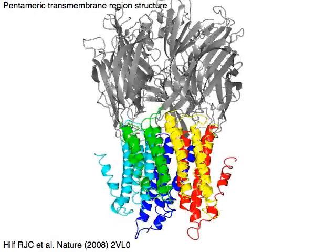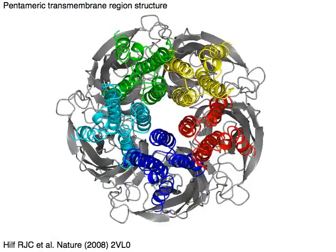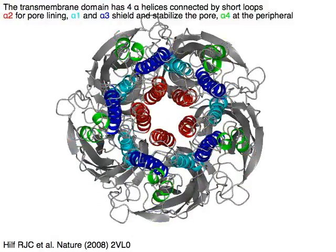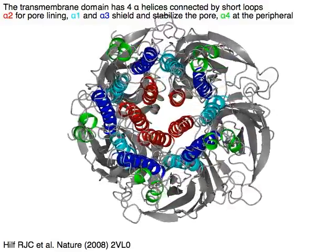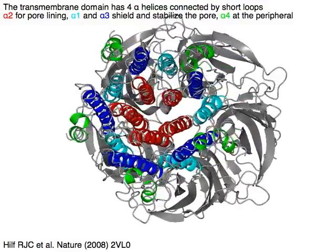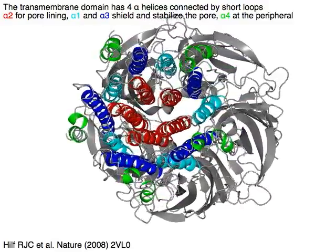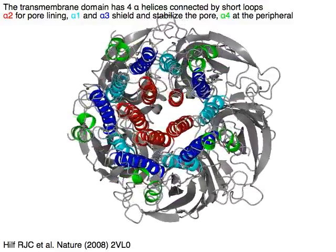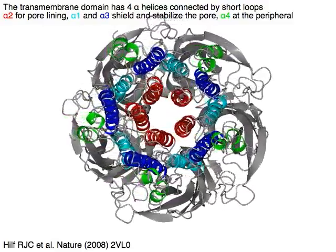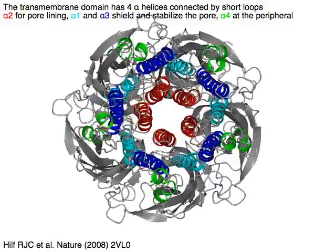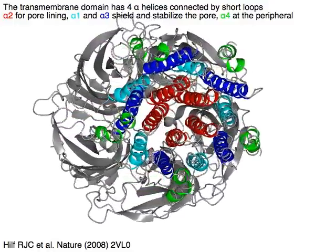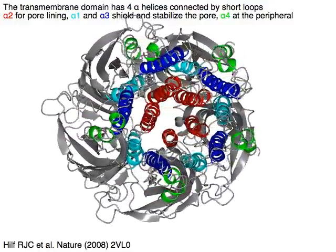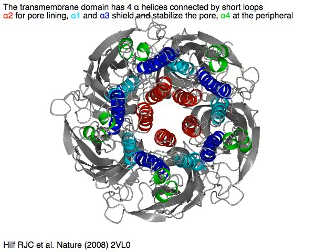Pentameric transmembrane region structure. The transmembrane domain has four alpha helices connected by short loops. Alpha-2 in red for pore lining, alpha-1 in cyan and alpha-3 in blue shield and stabilize the pore, and alpha-4 in green at the peripheral.